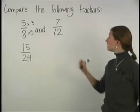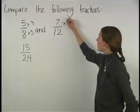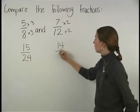To get a 24 in the denominator of 7 12ths, we multiply the numerator and the denominator by 2, which gives us 14 24ths.